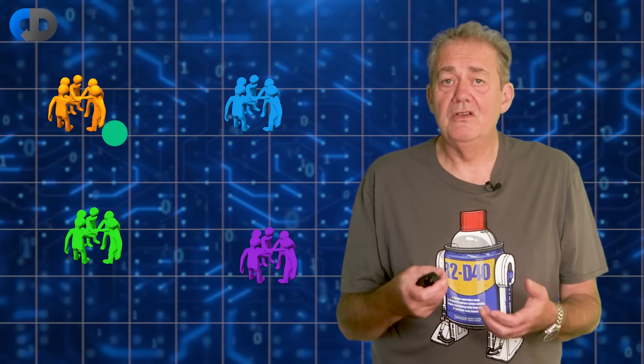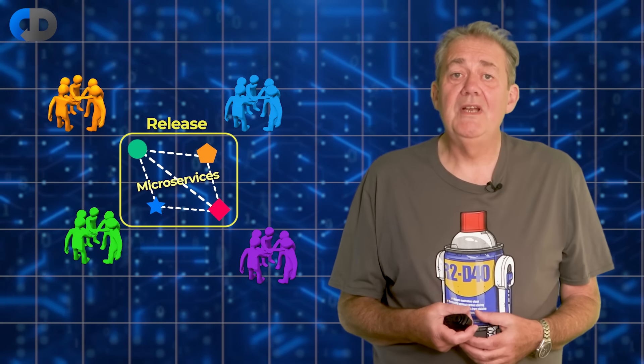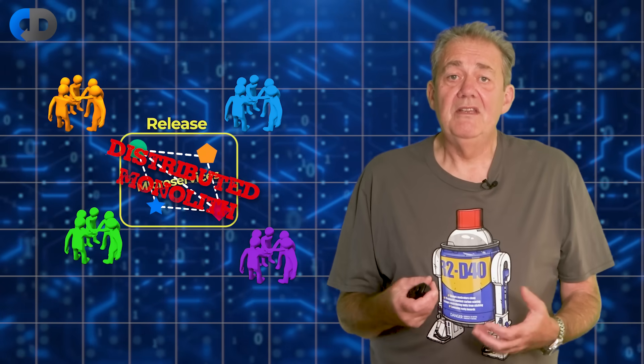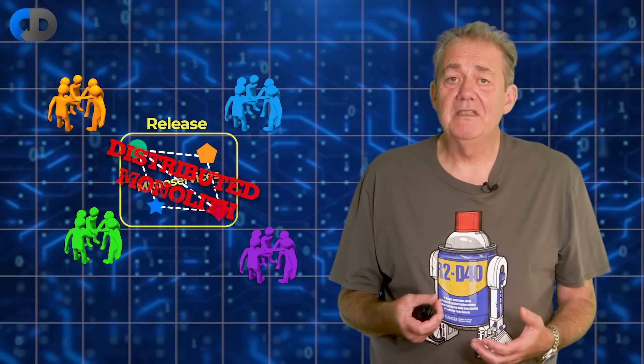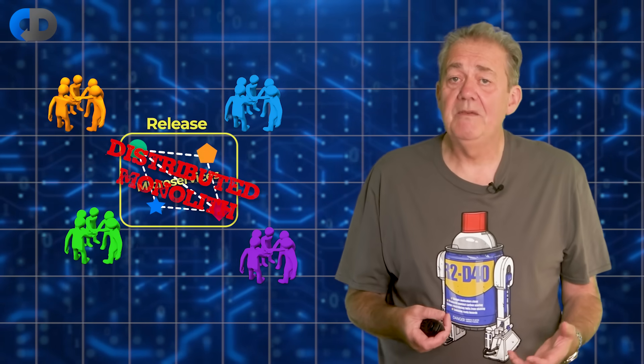If I have a microservice that is dependent on yours, and we can only release our services together after some form of testing, then what have we really got? We have a distributed monolith. And this is a very costly way to implement a distributed monolith, because mistakes are more distributed and feedback is slower.